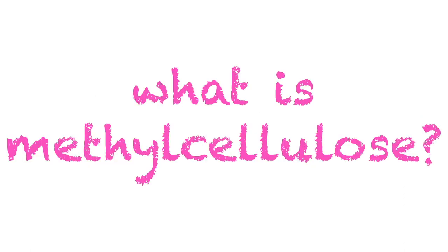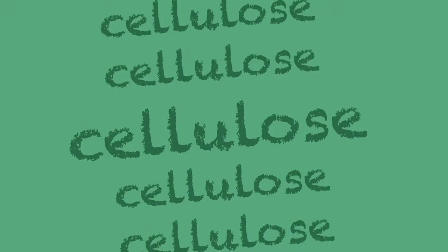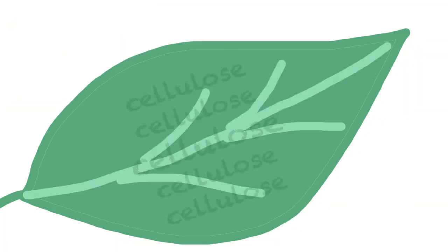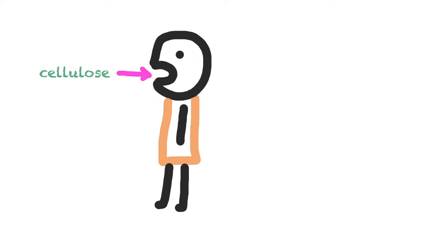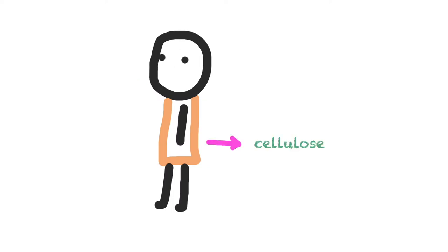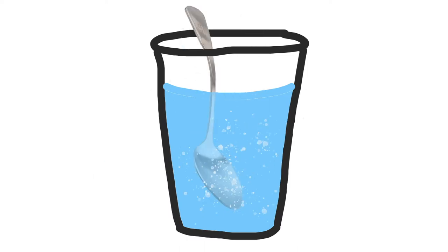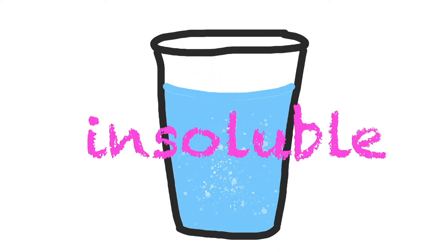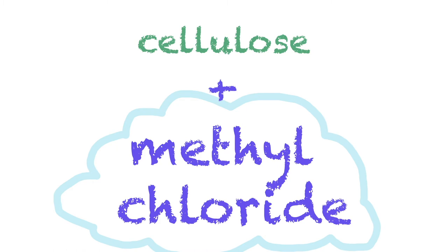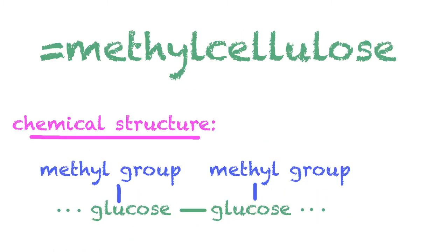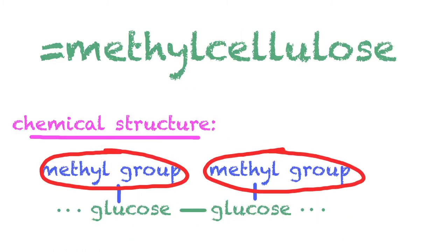First, we need to know: what is methyl cellulose? It's made from cellulose, which makes up the structure of plants and is not digestible, meaning it isn't absorbed by your body and just passes through. Cellulose is also insoluble and doesn't dissolve in water. By treating it with a gas called methyl chloride, methyl cellulose is produced and the chemical structure is changed so that methyl groups are now present.